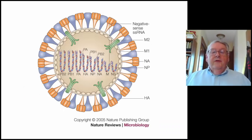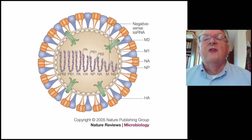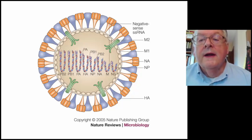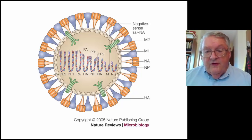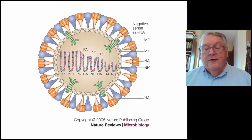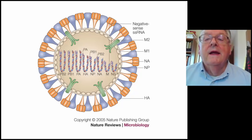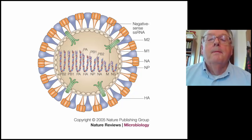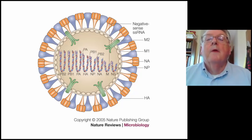This is a model of influenza virus. On the exterior, there are two glycoproteins. The hemagglutinin, or HA, is the blue knob — the HA attaches the virus to sialic acid-containing receptors on the surface of the cell. The NA is the neuraminidase, which is a tetramer — the orange-colored glycoprotein on the outside of the virus particle. This protein functions as the virus is released from the cell.